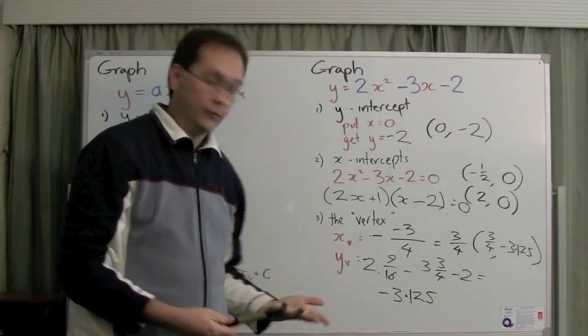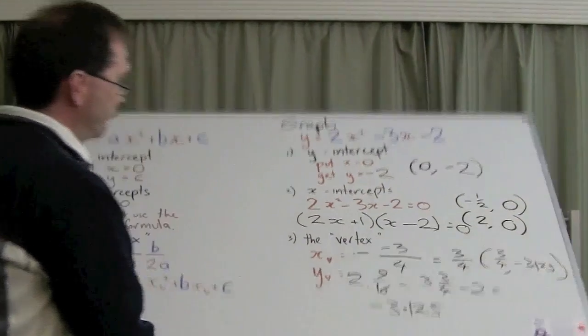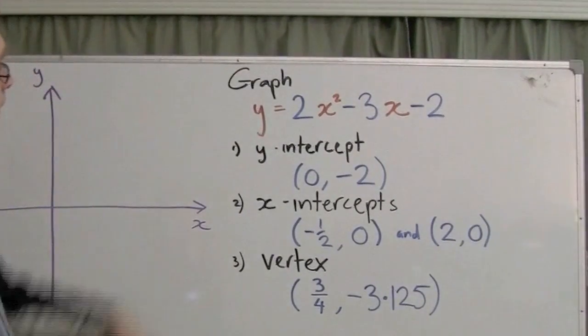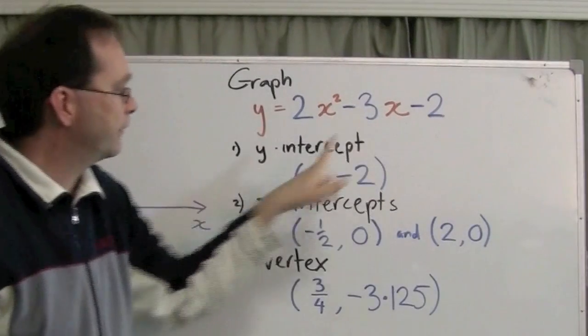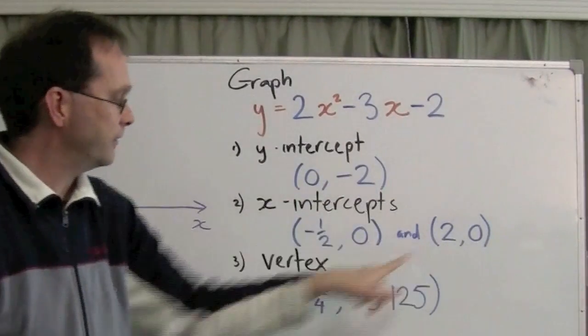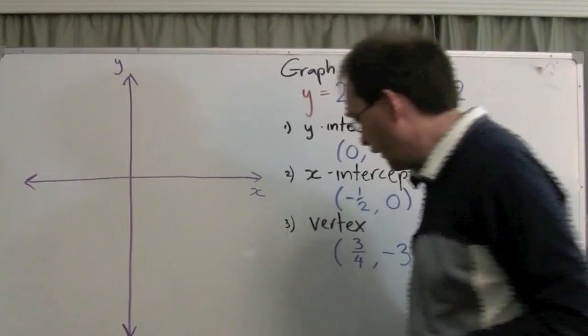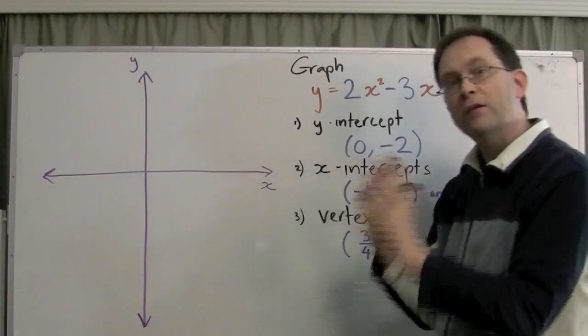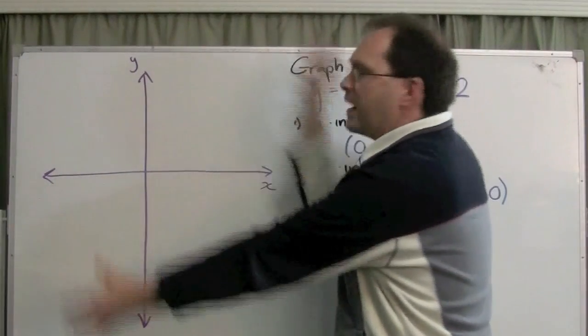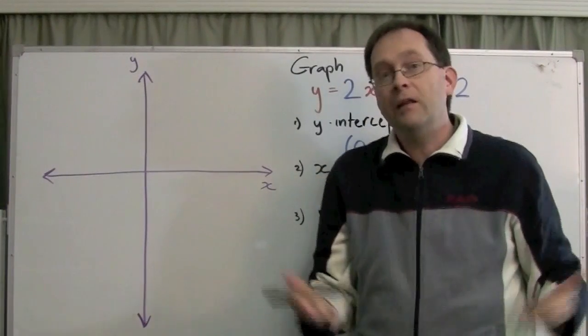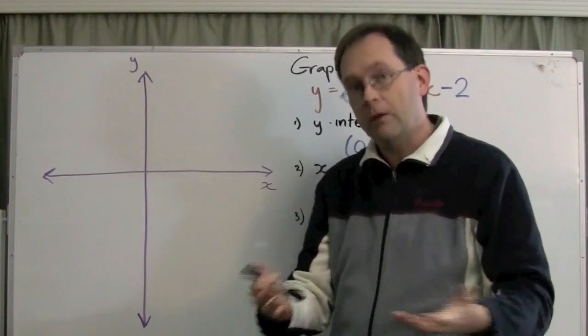Once you've found all these points, then it's time to actually start drawing the graph of your parabola. So, this is the curve we're trying to graph. I've found these four points. I'm going to plot all these points on this set of axes here. When you're drawing a graph, use a great big space. I'm using half the board here. You should use at least half a page if you're doing it on paper.